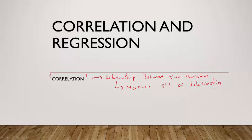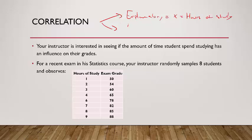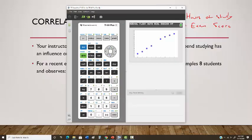Here's where we were last class. We had a data set and we first had to define the two variables: the explanatory variable, which is the X variable denoted as hours of study, and the response variable Y, which was the exam score. The scatter plot showed a positive linear relationship.